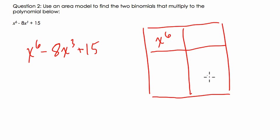If I put x to the 6th here and 15 here, watch what happens. So x to the 3rd times x to the 3rd is x to the 6th. I'm trying to find factors that multiply to these areas. 15 is 5 times 3, but I'm going to use negative 3 and negative 5, and here's why.